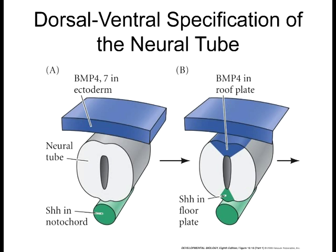There are two main divisions of this. So in development, we ask the question: what are the factors that cause this part of the spinal column to develop sensory neurons and this part to develop motor neurons? Well, it comes down to two main signaling centers.